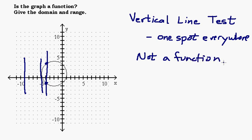Now, why does that work? We have to think about what the definition of a function is. If we have a vertical line right here going through zero — let's say it's going right through zero, that might be easy to see.